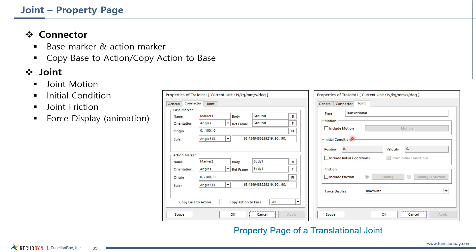In joint tab, you can decide whether to use joint motion, initial condition, or joint friction. Force display is to show the reaction force and apply to the joint during animation after simulation.